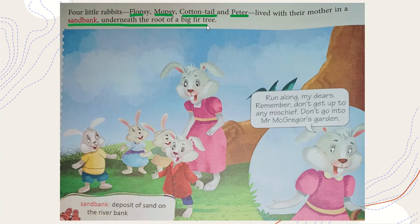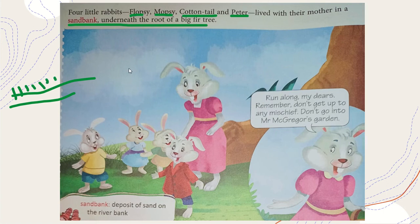They lived on the sandbank. A sandbank is a deposit of sand on the river bank — when a river flows, it carries small sand particles and rocks, and when its speed slows down, the sediments are deposited on the river bank. Underneath the root of the big fir tree, these four rabbits along with their mother used to live, inside burrows.